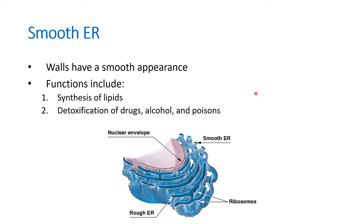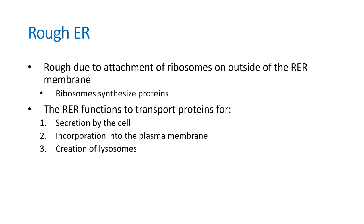The smooth endoplasmic reticulum helps in making lipids and also helps with detoxification of drugs and alcohol. If you think about which cells in your body are going to have more smooth ER, a good example would be your liver cells, since the liver helps us detoxify things like alcohol. So liver cells are definitely going to have more smooth ER compared to, say, your muscle cells.